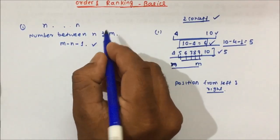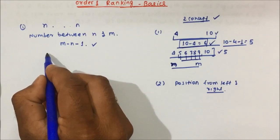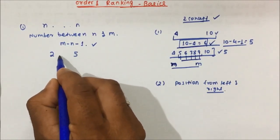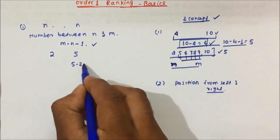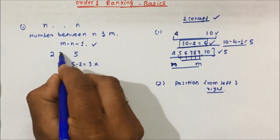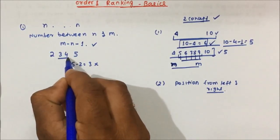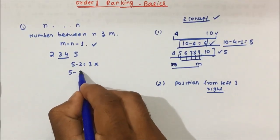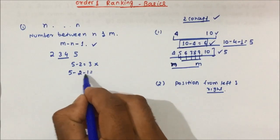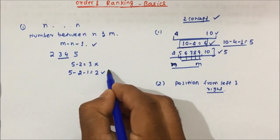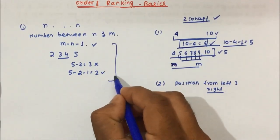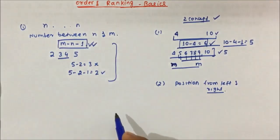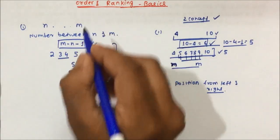In fact, if you don't remember the formula, then what you can do? You can simply take: in between 2 and 5, how many numbers will be there? It will not be 5 minus 2. See: 3, 4 — so only 2 numbers will be there in between 2 and 5. So you write 5 minus 2 minus 1, which equals 2. So you can derive the formula yourself. No need to remember m minus n minus 1 to find the numbers between n and m.